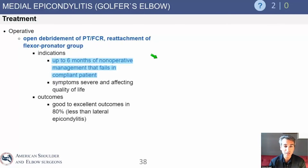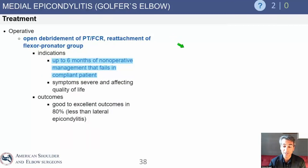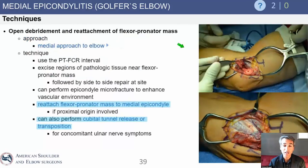After failure of nonoperative treatment, surgical debridement is performed. Medial epicondylitis when it needs surgery is treated open, whereas the lateral side can be treated with arthroscopy — this is an important distinction. The reason is that the nerve anatomy on the medial side of the elbow does not lend itself to arthroscopic techniques: it's too high risk, and your ability to reach the pathology is not the same as on the lateral side with arthroscopic instruments.